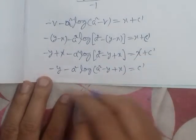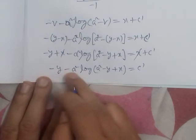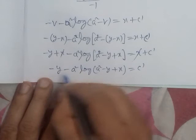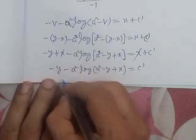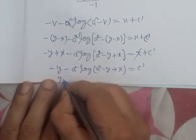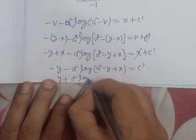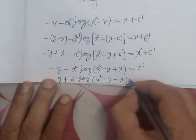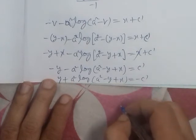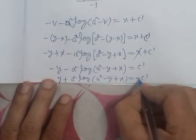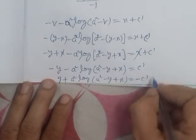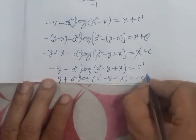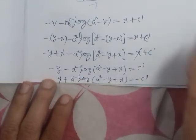We have minus minus minus a square log of log of a square minus y plus x is equal to c dash. Now if we want to add these terms, we multiply by minus one. This will be plus y and plus a square log of a square minus y plus x, and this will be minus c dash — so our c dash becomes minus c dash. If we add c dash, we get this answer.